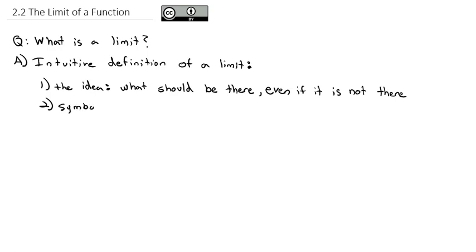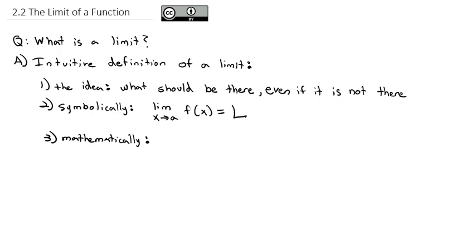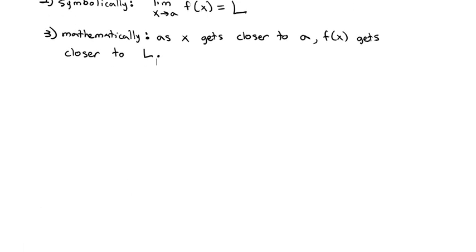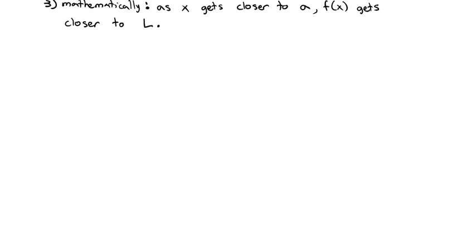Symbolically, we represent that by saying: the limit as x approaches some number a of f(x) equals L. In words, what those symbols mean is that as x gets closer to a, f(x) gets closer to L. So we're trying to figure out what is the function approaching — what is it getting closer to as our x gets closer to some value a?